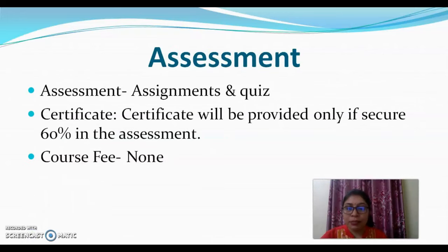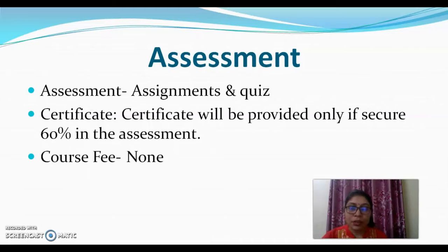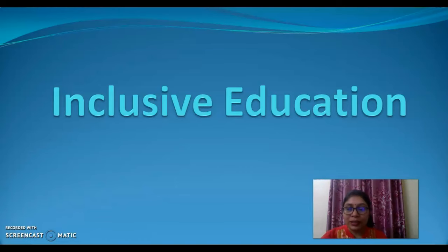As far as the assessment procedure is concerned, it will consist of two parameters: the first is the assignment and the second is the quizzes. Your final grades will be based on performance in assignments and quizzes together. After the successful completion of the course with at least 60 percent, a certificate will be awarded to you. So dear learners, let's start the journey of learning about inclusive education. I welcome you once again in this course. Thank you.